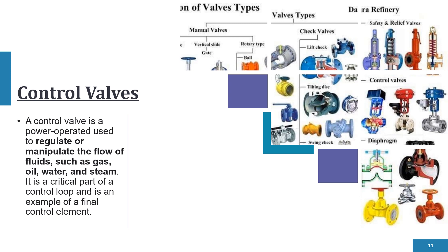The next topic is the control valve system. A control valve is a power-operated device used to regulate or manipulate the flow of fluids such as gas, oil, water, and steam. It is a critical part of a control loop and is an example of a final control element. There are various types of control valves in industry, and we are going to explore some of them in the next slides.